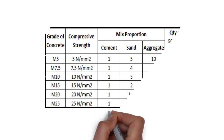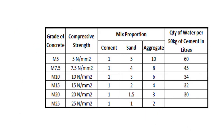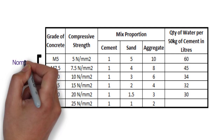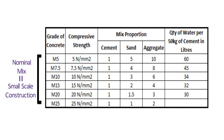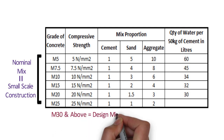Now coming back to grades of concrete, this table shows the proportion of cement, sand, aggregate and water in different grades of concrete. For M5 grade, the mix proportion is 1:5:10, and the quantity of water required shall be 60 litres. You can see the mix proportion of other grades of concrete up to M25. Up to M25, a nominal mix can be made, which shall be used for small-scale construction where concrete consumption is not high. But for M30 and above grades, a design mix should be used.